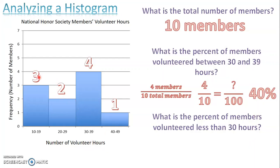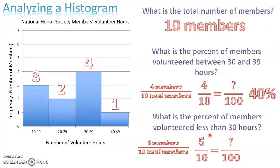What is the percent of members who volunteered less than 30 hours? Three members plus two members gives a total of five members who volunteered less than 30 hours — five out of 10 members. Setting up the proportion: 5 out of 10, what times 10 gets to 100? Times 10. So 5 times 10 is 50 out of 100, meaning 50 percent of the members volunteered less than 30 hours.